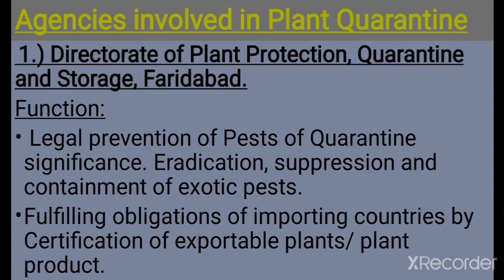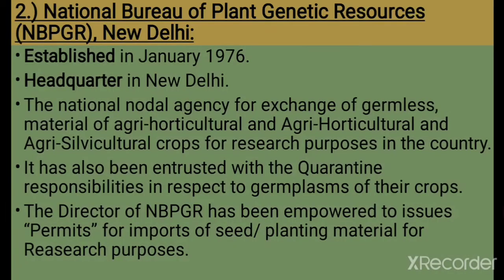Now, agencies involved in plant quarantine: number one is the Directorate of Plant Protection, Quarantine and Storage. Its functions include legal prevention of pests of quarantine significance, controlling import or entry, eradication, suppression, and containment of exotic pests, and fulfilling obligations of importing countries by certification of exportable plants or plant products.